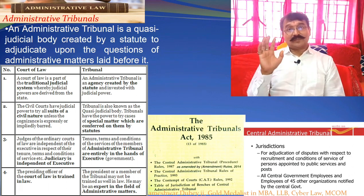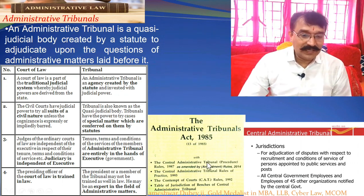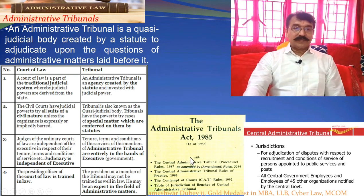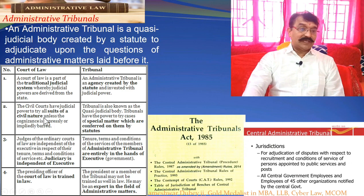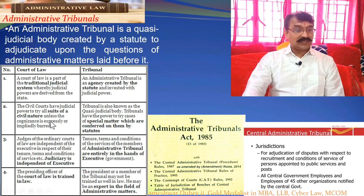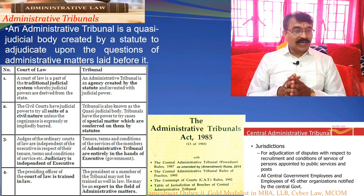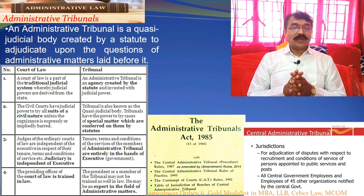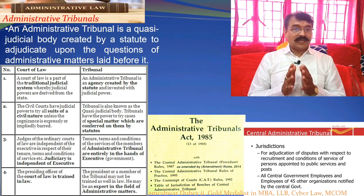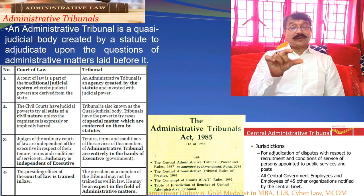Some special statutes are enacted by Parliament — for example, the Administrative Tribunal Act 1985 was passed, and this empowers central government employees to approach the administrative tribunal. Civil courts have jurisdiction power to try all suits of civil nature unless cognizance is especially or impliedly barred. Whereas tribunals are empowered to try all cases of special matters which are conferred on them by statutes. Statutes decide what matters are to be decided by the tribunal and what not.